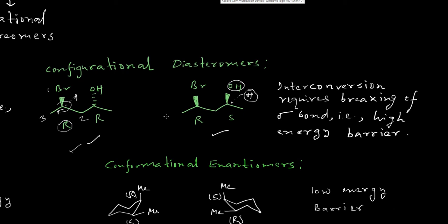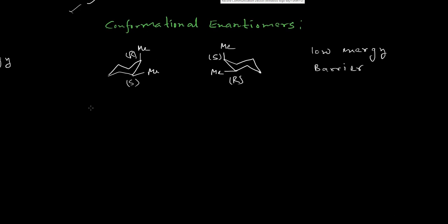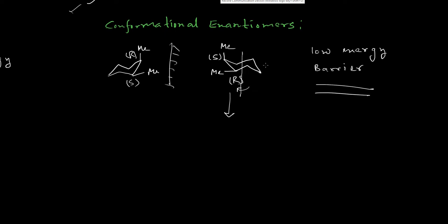Now we will look into conformational enantiomers. The key criterion here is that the energy barrier must be very low. These two molecules are enantiomers — they are mirror images of each other but not superimposable. To check superimposability, just rotate one molecule around this axis by 120 degrees, and you will get the other molecule's orientation.